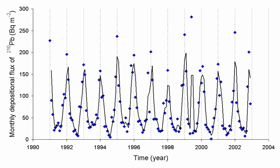Radon is produced by the radioactive decay of radium-226, which is found in uranium ores, phosphate rock, shales, igneous and metamorphic rocks such as granite, gneiss, and schist, and to a lesser degree in common rocks such as limestone. Every square mile of surface soil, to a depth of 6 inches (2.6 square kilometers to a depth of 15 centimeters), contains approximately 1 gram of radium, which releases radon in small amounts to the atmosphere. On a global scale, it is estimated that 2,400 million curies of radon are released from soil annually.